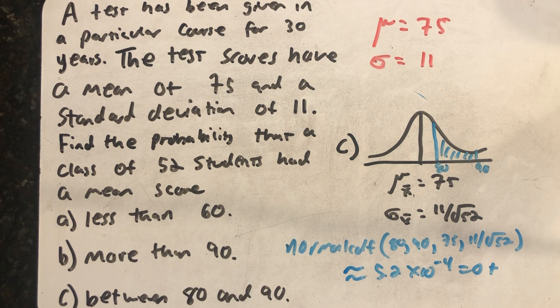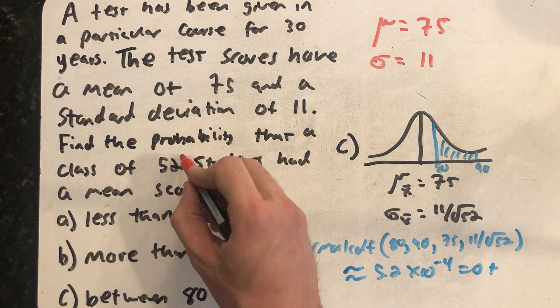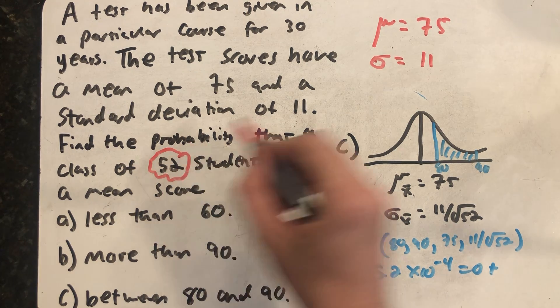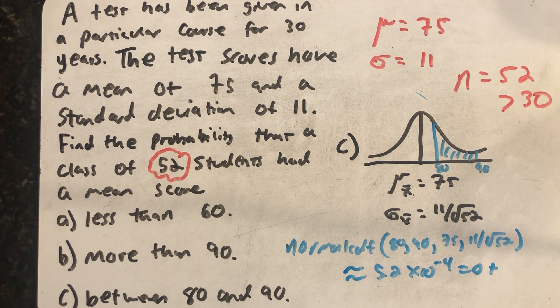Well, there's just one more example of using the central limit theorem. And the reason I really wanted to do this is because I got to use the central limit theorem this time because of the sample size being 52, which is larger than 30. And that's it for now.